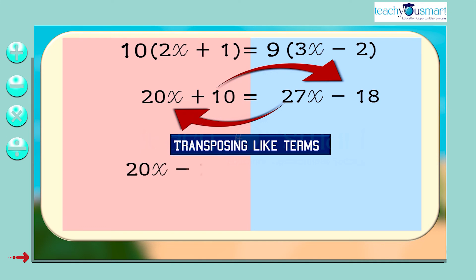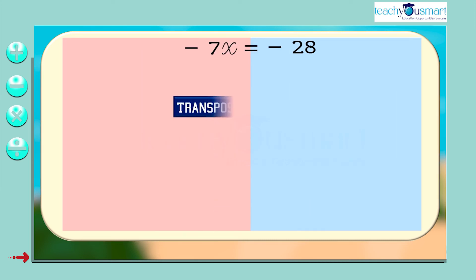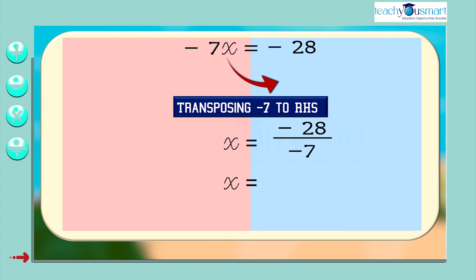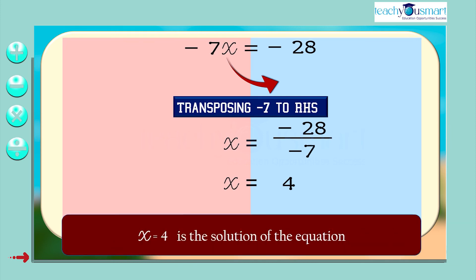Transposing like terms, 20x minus 27x equals minus 18 minus 10. Minus 7x equals minus 28. Transposing minus 7 to RHS, x equals minus 28 by minus 7. That is, x equals 4 is the solution of the equation.